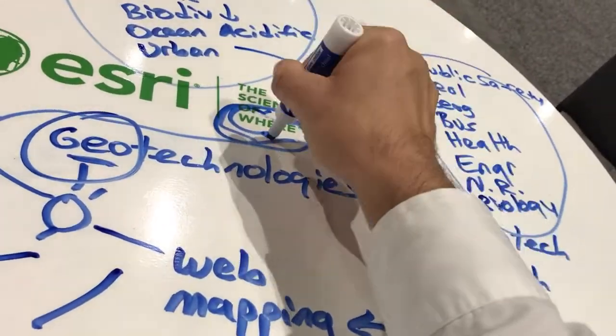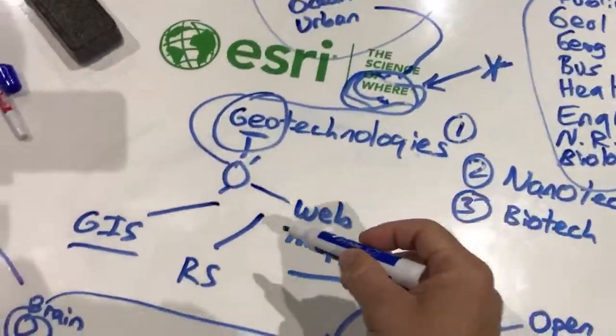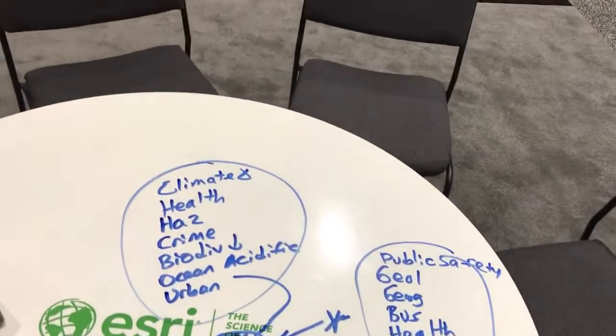They have a spatial pattern, a location, a relationship. And we can use these tools, these geotechnology tools, along with the questions that you're asking to address these problems, to actually make a better world.